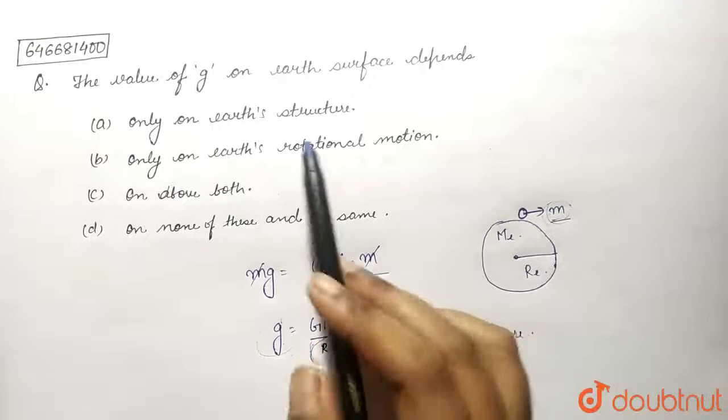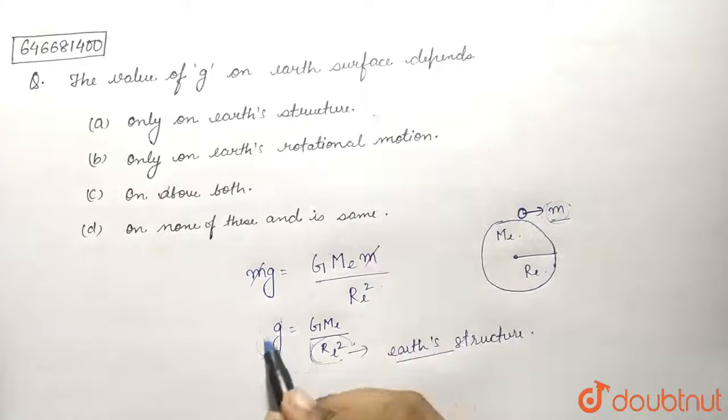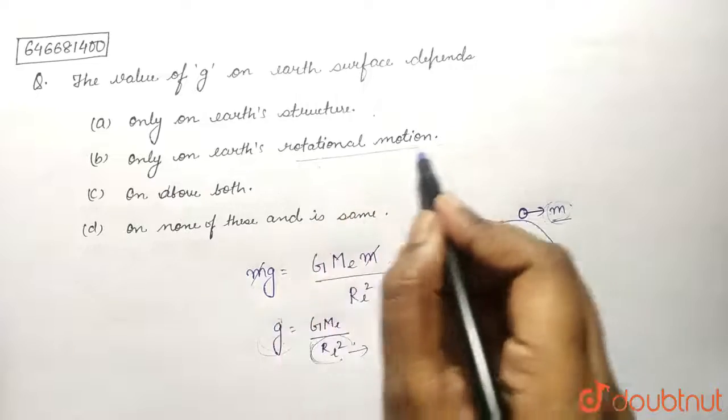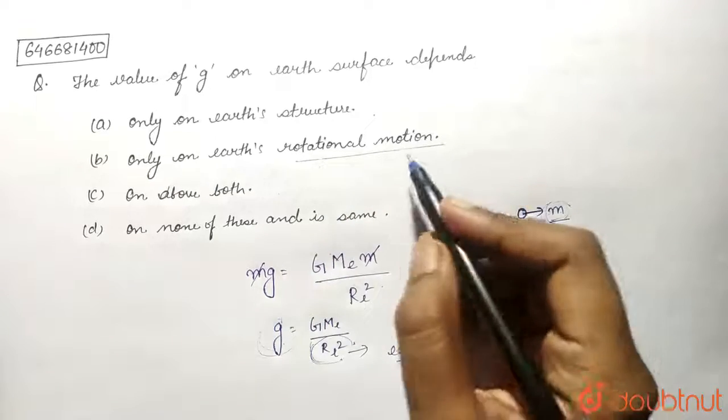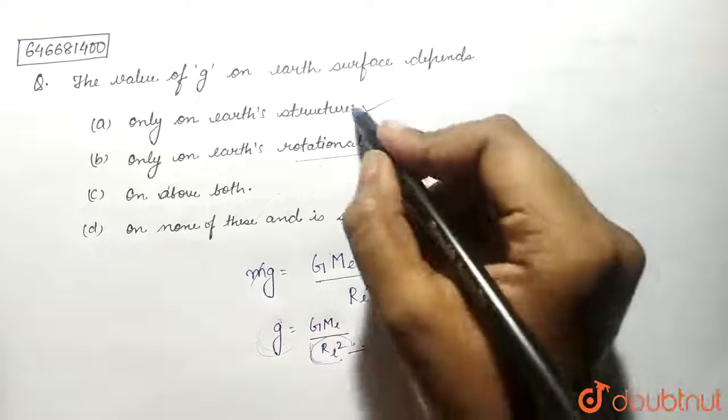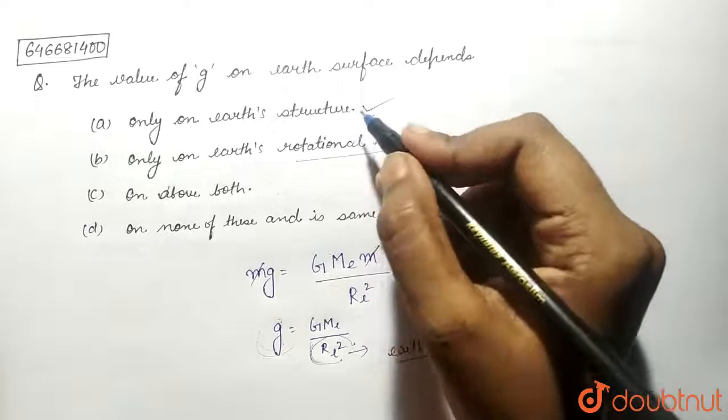And gravitational acceleration due to gravity is affected by Earth's rotational motion. So it is affected by this also. It depends on both of these. So option C is the correct answer, on both.